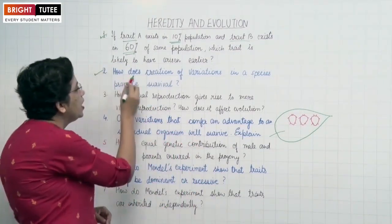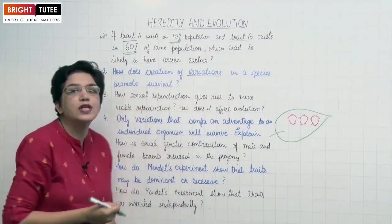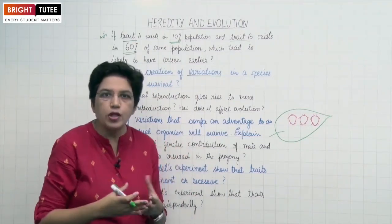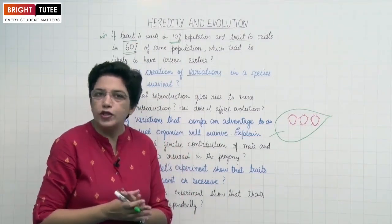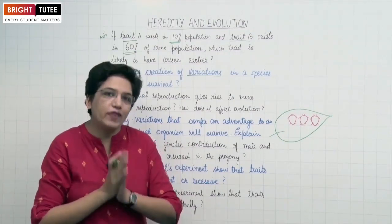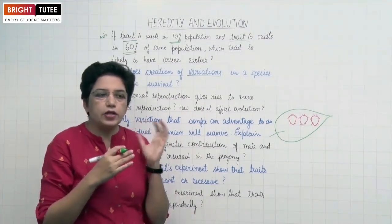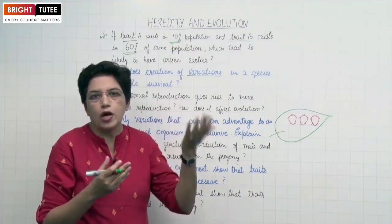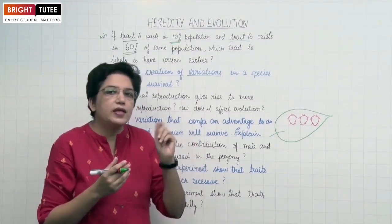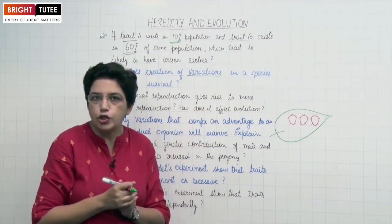Question 2: How does creation of variations in a species promote survival? Variations are quite helpful for the survival of species. Variations occur when the new generation born from the first generation are not exact copies — there is some change in any one of the characters.